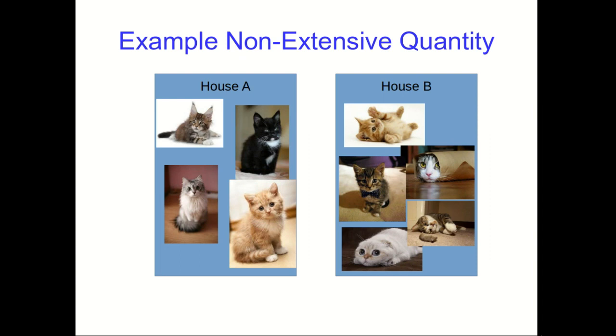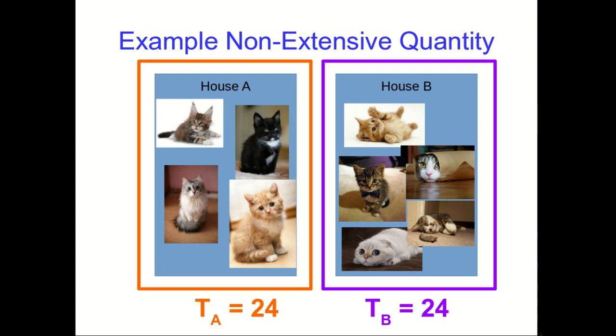that these are all indoor cats, and the people living in these houses are keeping them inside. So in that case, the number of hours per day that each of these houses is occupied by cats is 24.